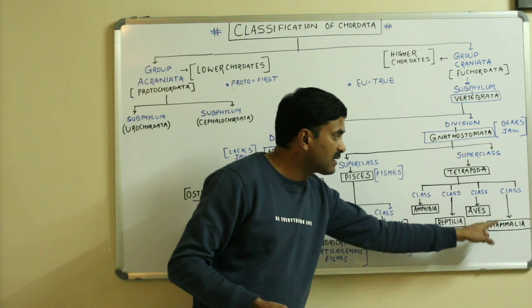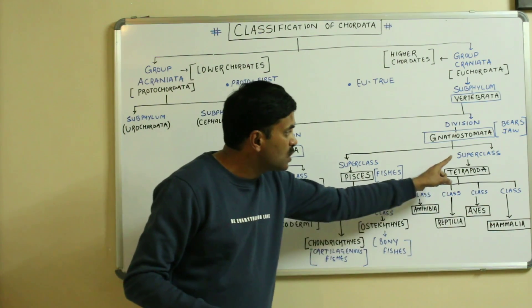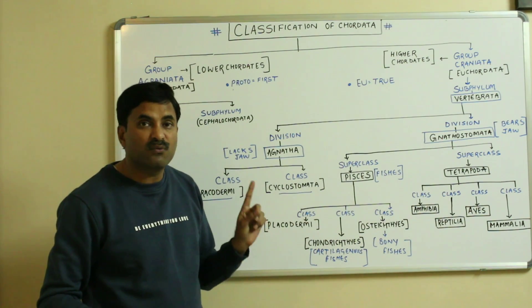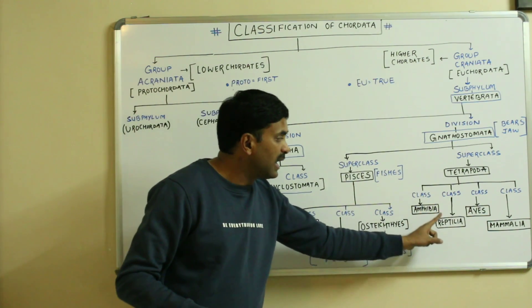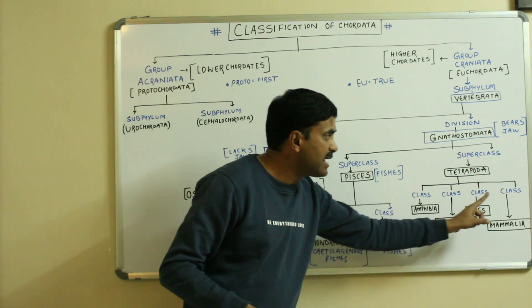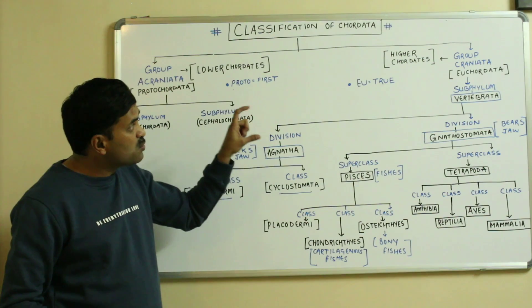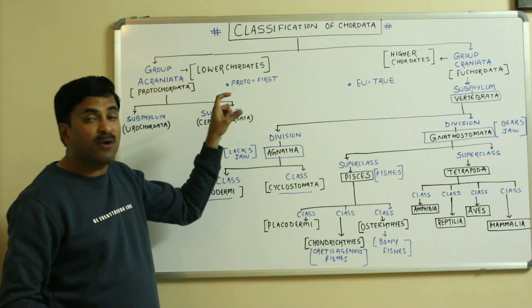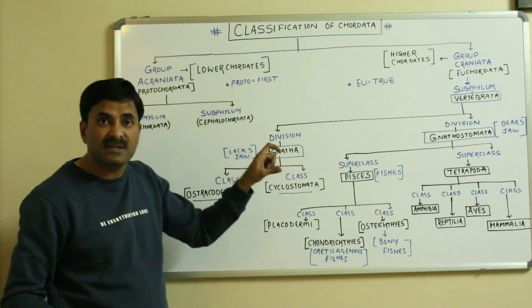The superclass Tetrapoda has been classified into four classes: class Amphibia, class Reptilia, class Aves, and class Mammalia. This is the outline sketch of the classification of the chordates.